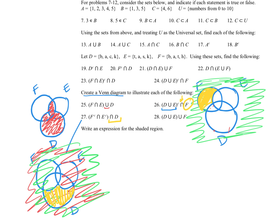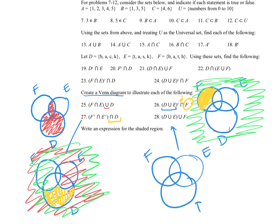For number 28, filling this out with the circles in the same spots. We want to union a bunch of stuff: D union with E means all of D and all of E together. But then we also want to include F, so it's really everything inside all three circles.